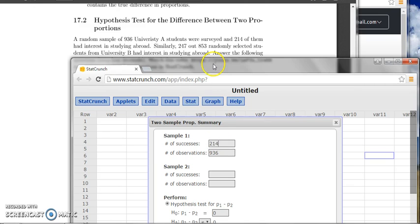So sample two is University B. University B, we have 853, and our number of success for this university is 247.